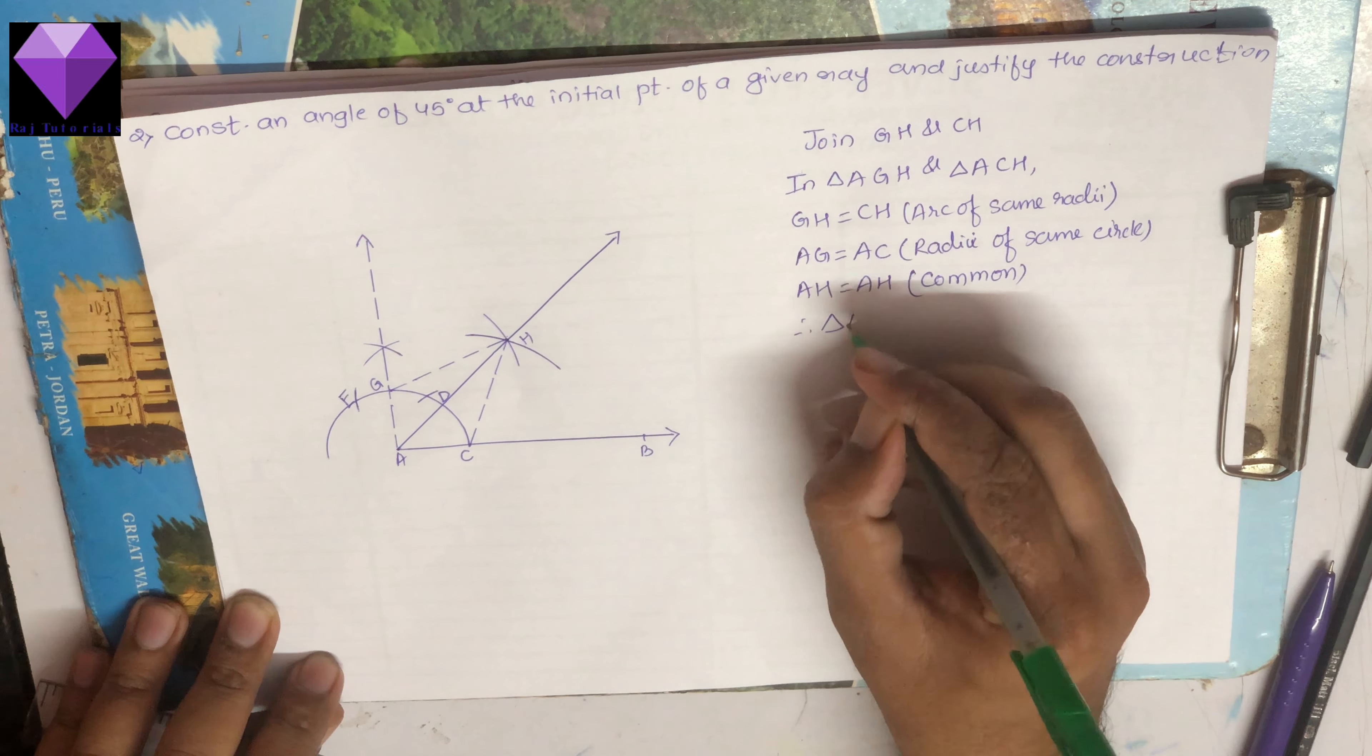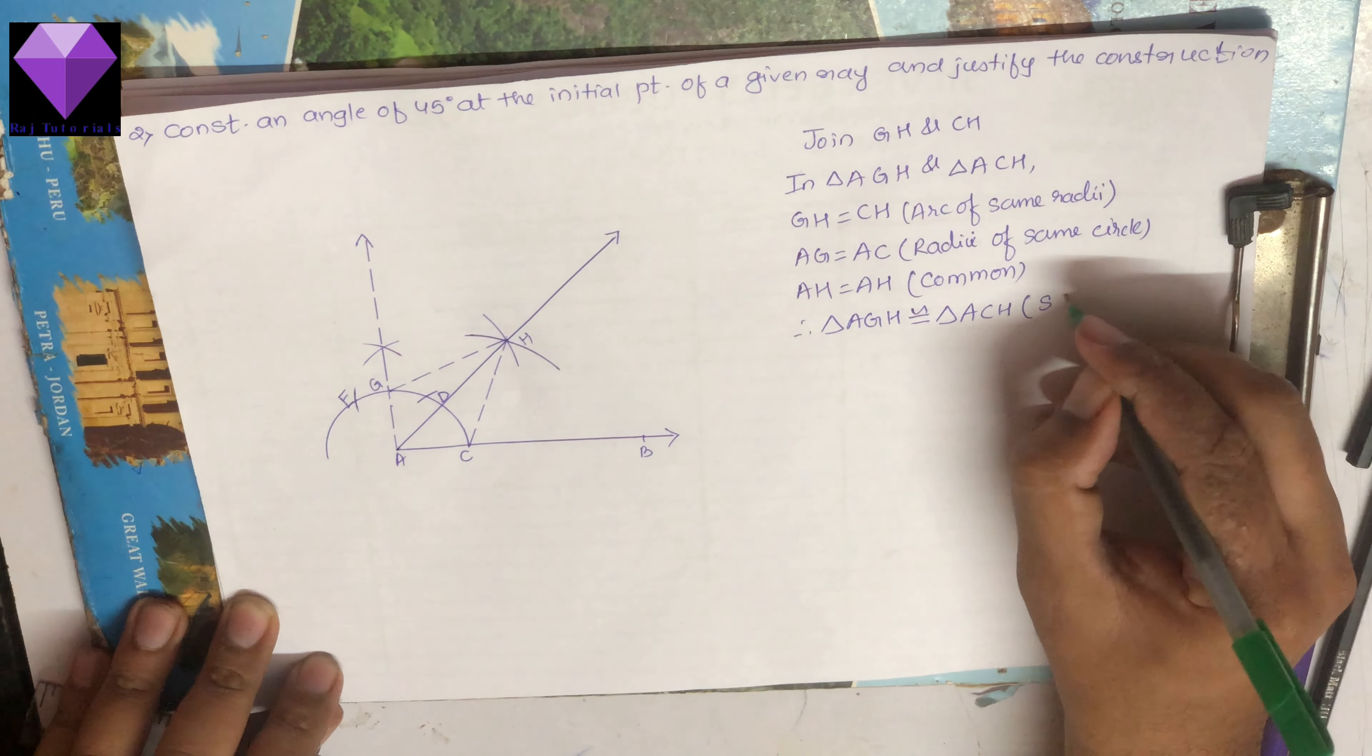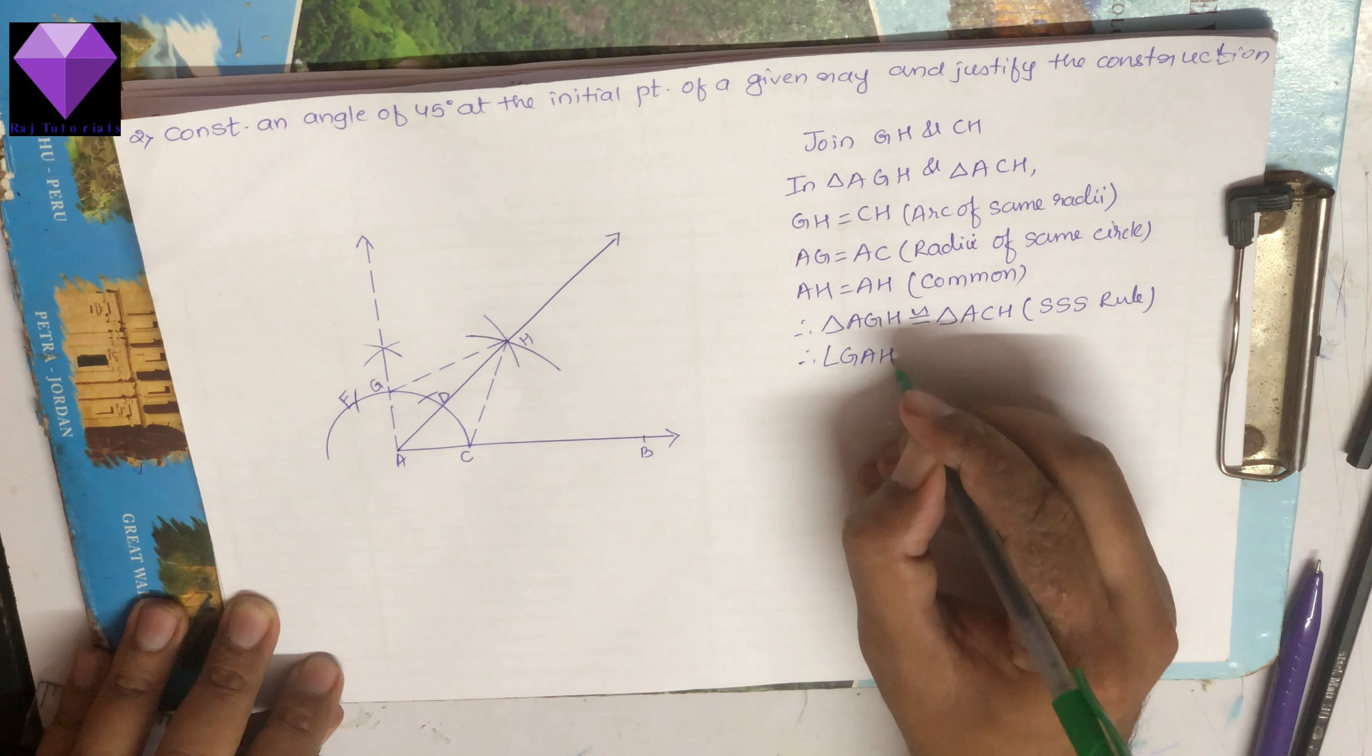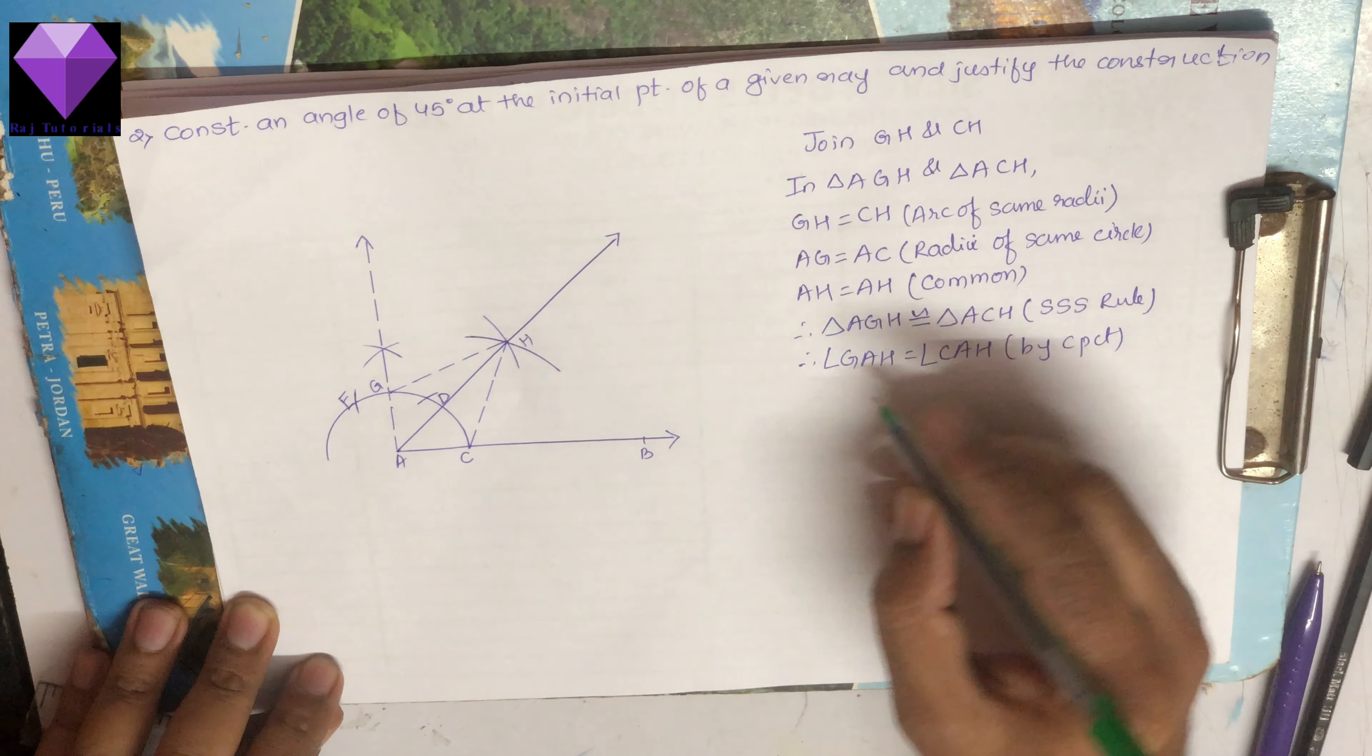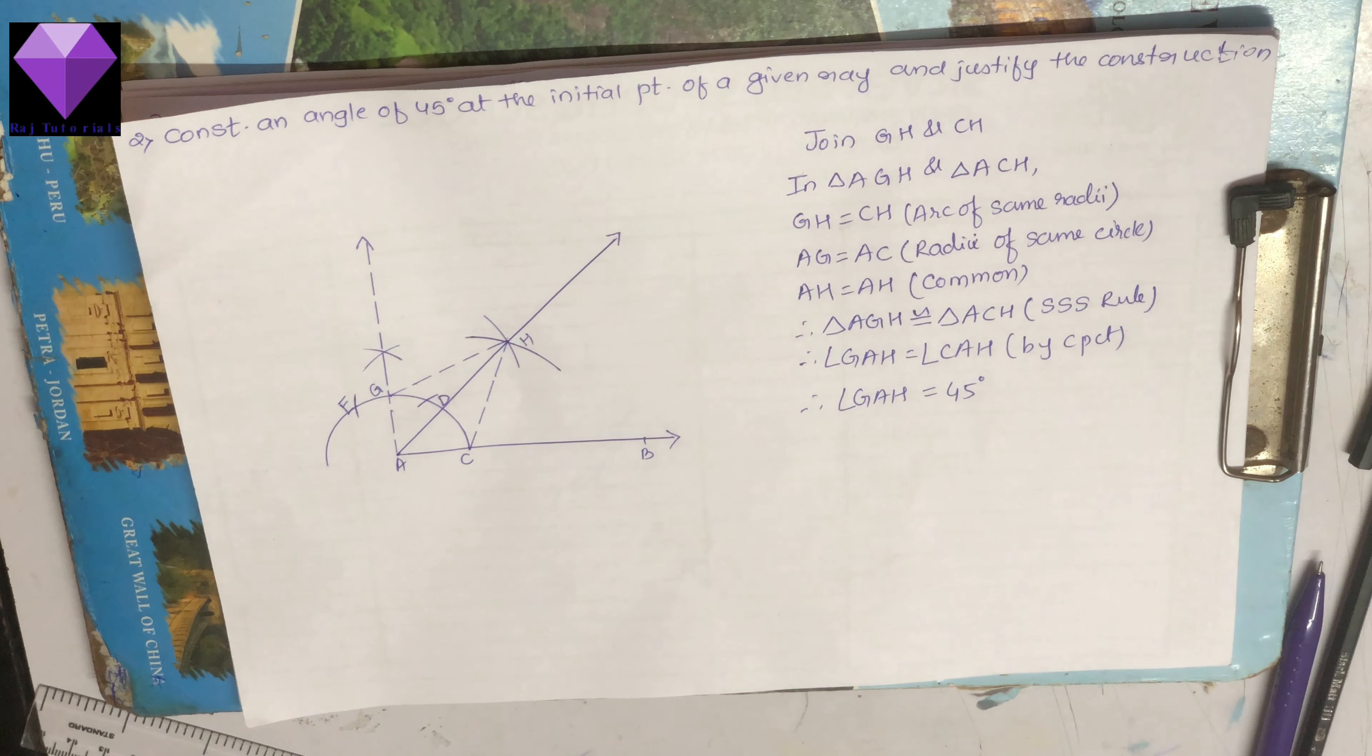Therefore triangle AGH is congruent to triangle ACH using SSS congruency rule. So angle GAH equals angle CAH by CPCT. Therefore angle GAH equals 45 degrees. This is my justification. Thank you.